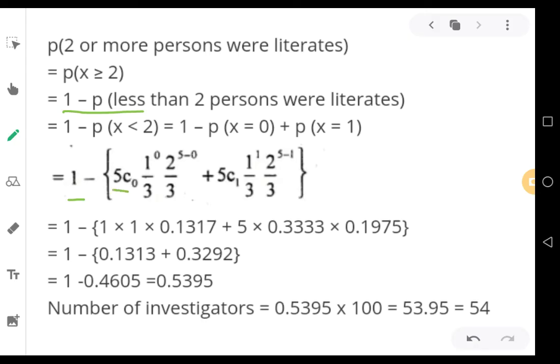Therefore, NCX will be 5 combination 0 into P to the power of x, that is 1 by 3 to the power of 0 into Q to the power of n minus x, that is 2 by 3 to the power of 5 minus 0 plus. Now expand the formula for P1. NCX will become 5C1 into P to the power of 1 into Q to the power of n minus x, that is 2 by 3 to the power of 5 minus 1.